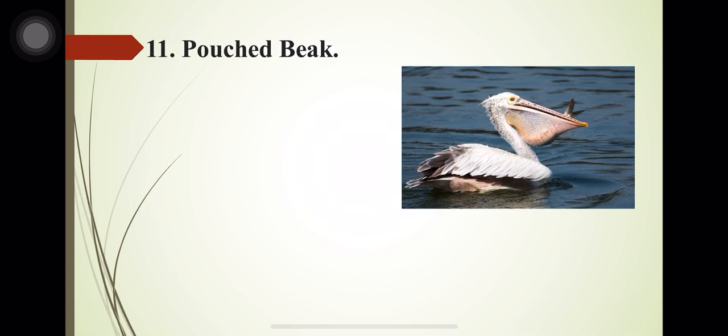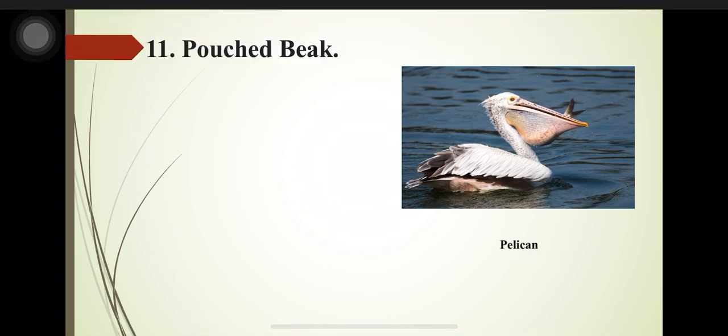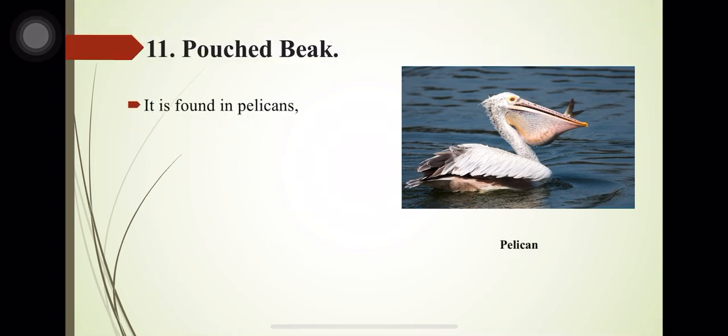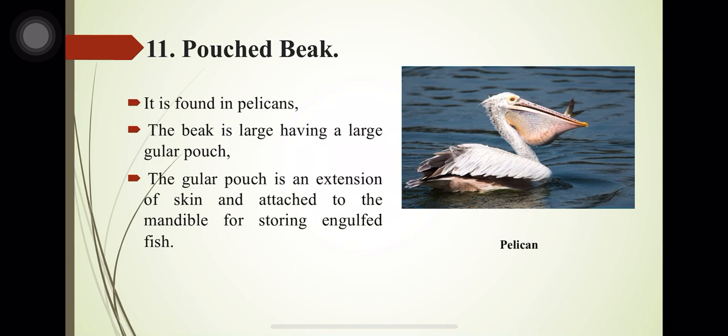The pouch beak is found in pelicans. The beak is large, having a large gular pouch. The gular pouch is an extension of skin attached to the mandible, used for strongly engulfing fish.